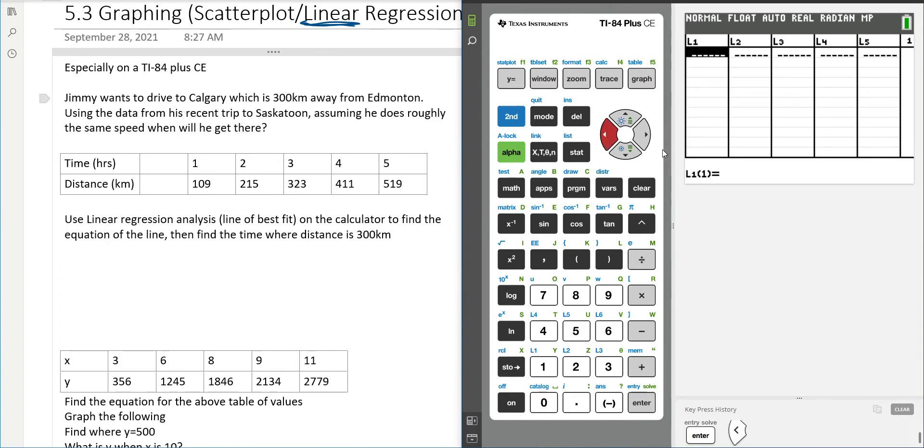First of all, our x values go in L1, y values go in L2 I believe. So let's just plug that in. So 1 enter, 2 enter, 3 enter, 4 enter, 5 enter. Pretty straightforward. Then we click to the right and we plug in the other values. 109 enter, 215 enter, 323 enter, 411 enter, 519 enter.